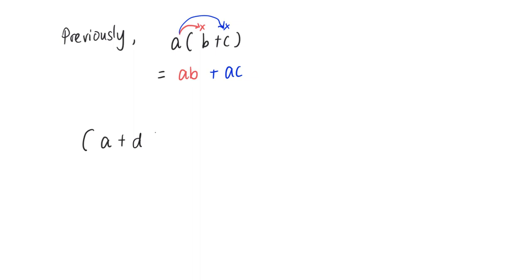Now what happens when we have (a + d) times (b + c)? This is the question. So to illustrate this, to better illustrate this, I'm going to use a rectangle and use the concept of finding an area. Given a rectangle, I will have my size as a and d, so it's a plus d.